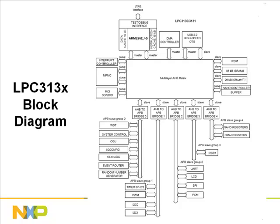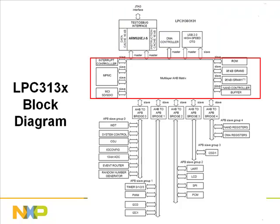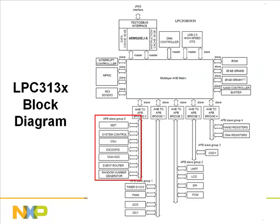Let's do an overview of the LPC 313X block diagram. At the very top we have the four main masters: the ARM 926 instruction and data bus, DMA controller, and OTG controller. We have internal and external memories — internal ROM and two banks of 96 kilobytes SRAM. Supporting external memories are the NAND flash controller, multi-purpose memory controller, and the MCI interfaces.